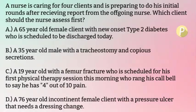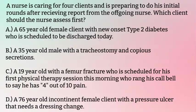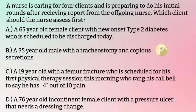Option B: a 35-year-old male with a tracheostomy and copious secretions. When we think of a patient with a tracheostomy who has copious secretions, we're concerned that those secretions might block the patient's airway. So option B is about airway, which is physiological. This option now becomes our priority.